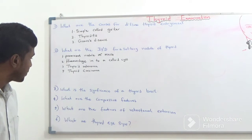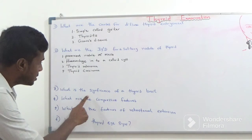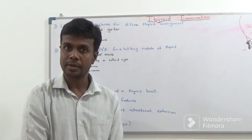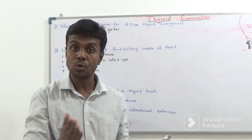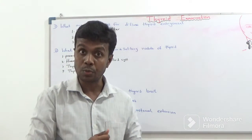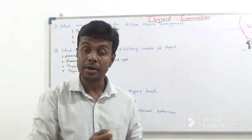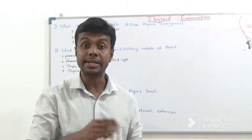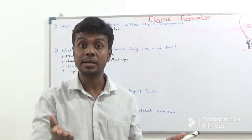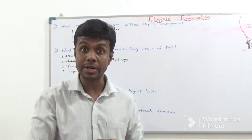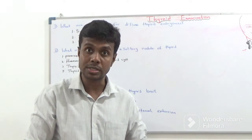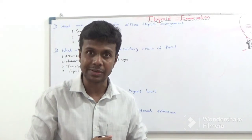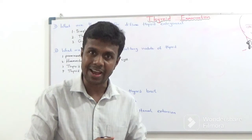Question number three: what is the significance of a thyroid bruit? It is found in the right upper lobe of the thyroid gland and indicates high vascularity and hyperdynamic circulation, usually seen in patients with Graves' disease.